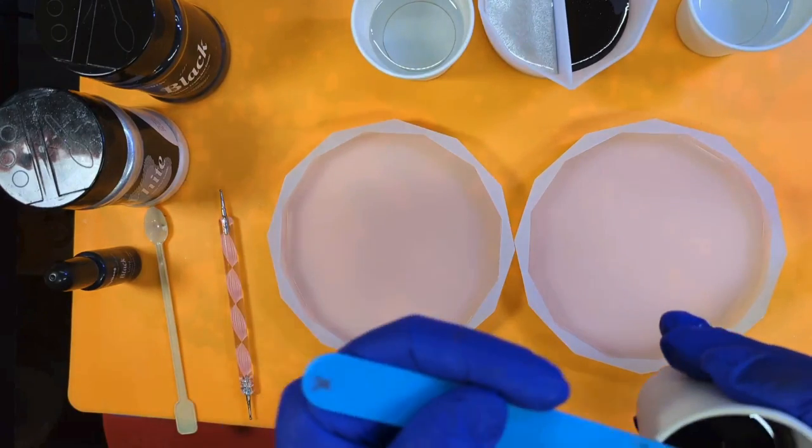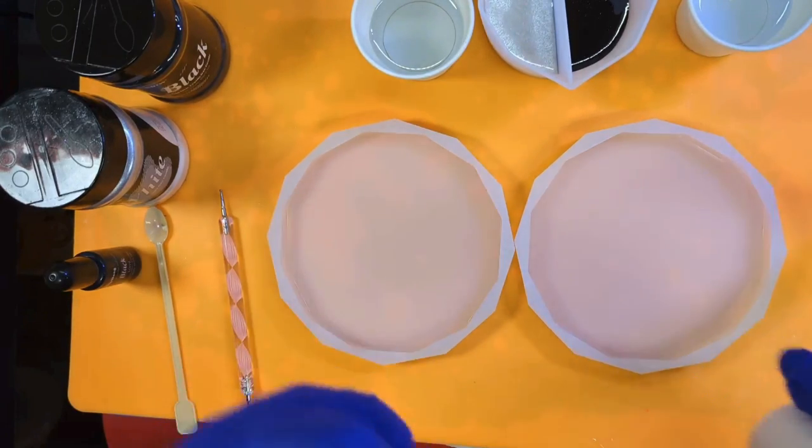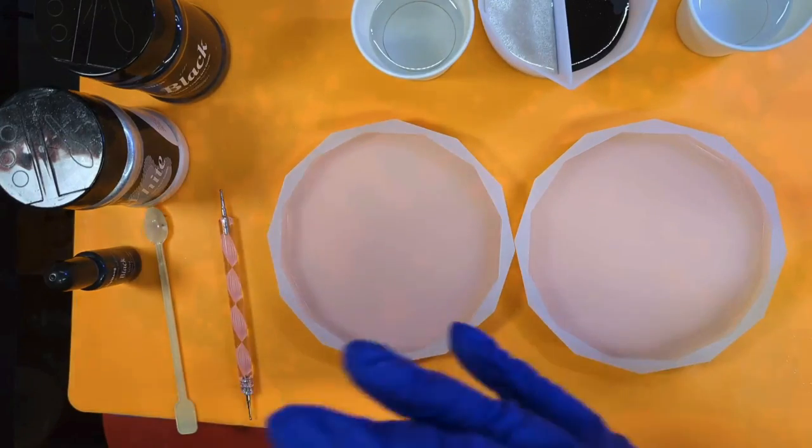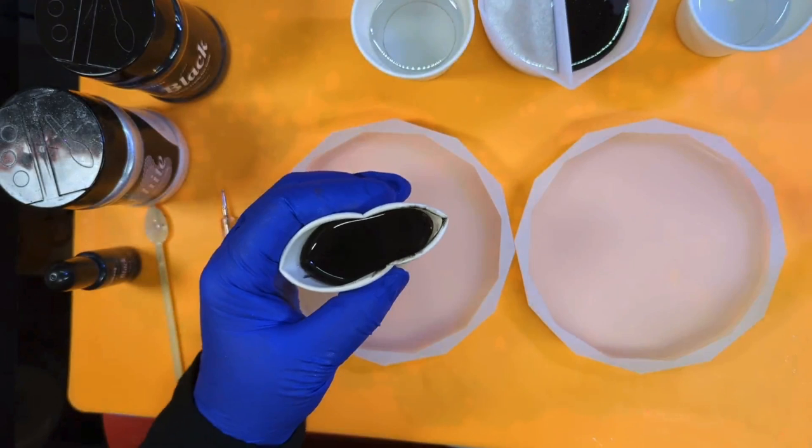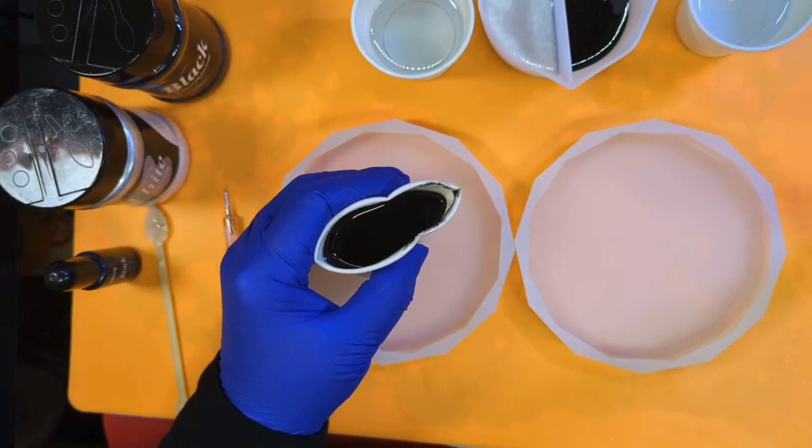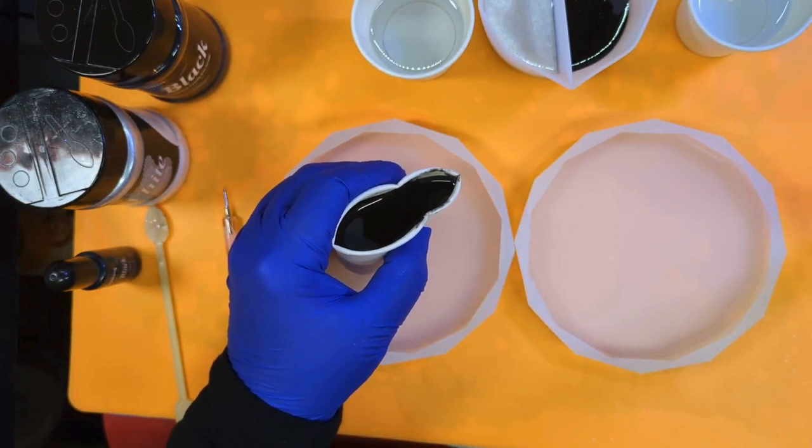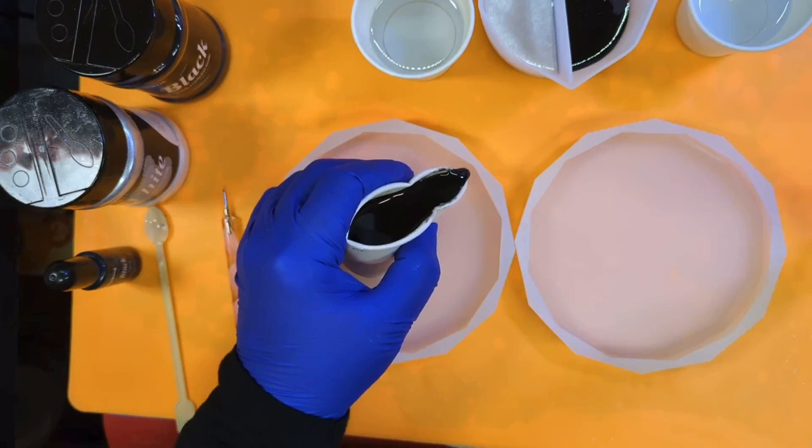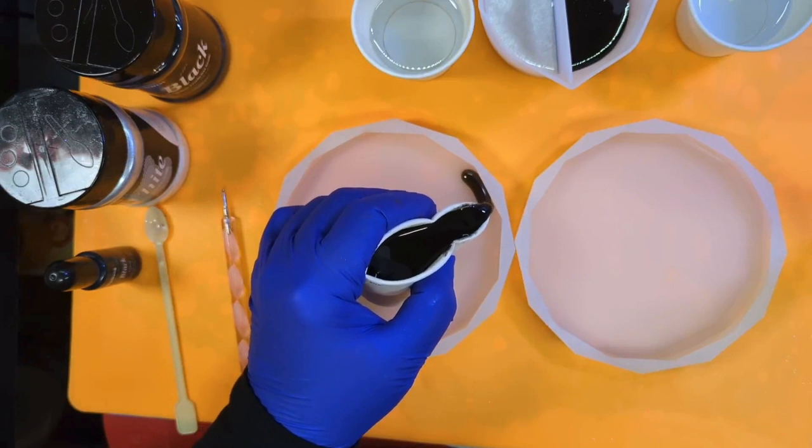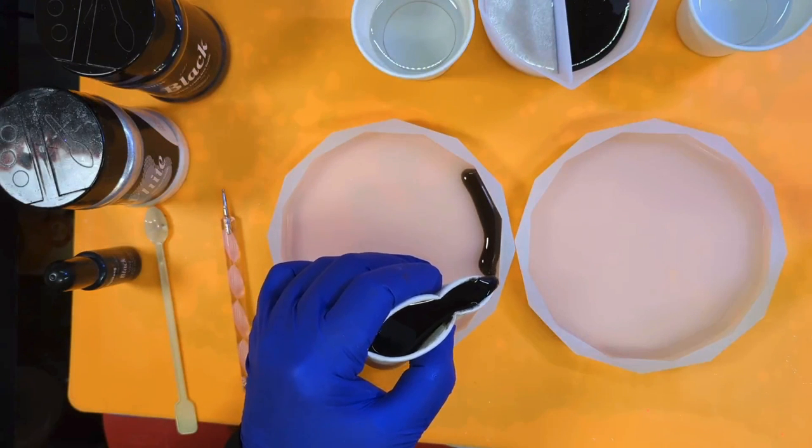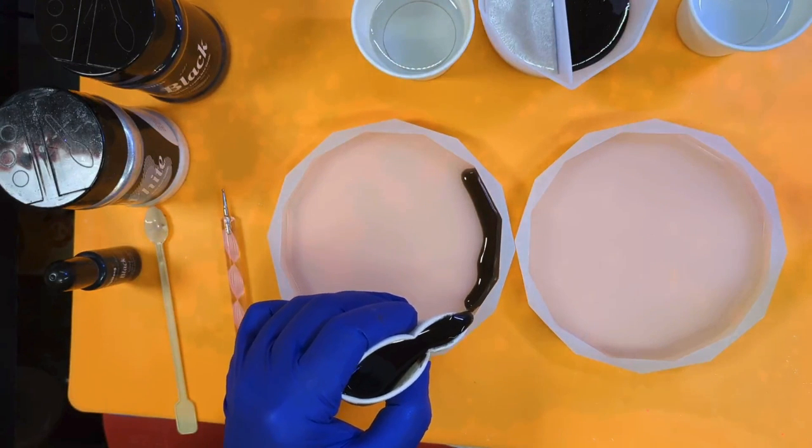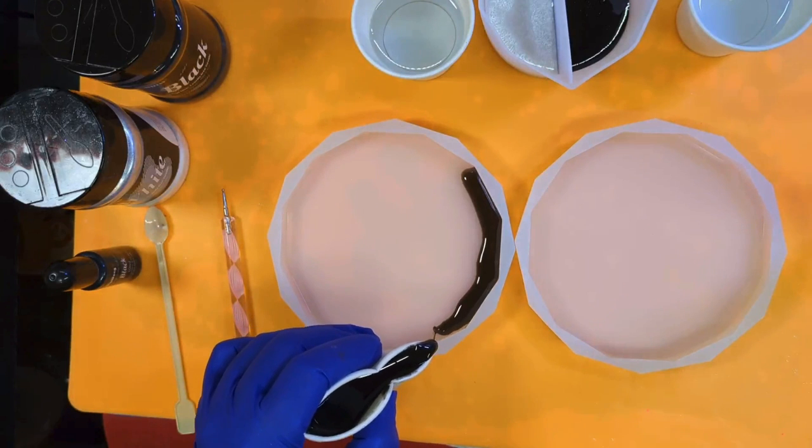Isopropyl, isopropyl, I can't say that word. Alcohol, let's just say alcohol. Right, so we're gonna go around the edge laying down our first ring. And again, as always, just make sure it's touching the mold.